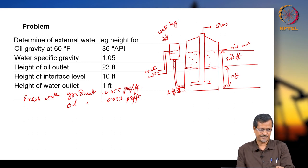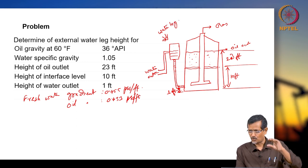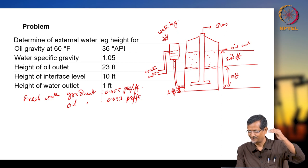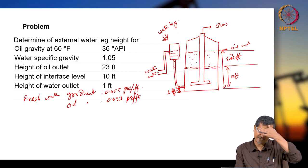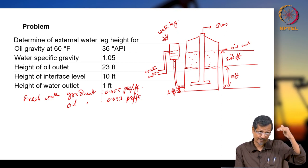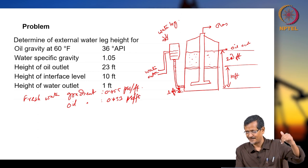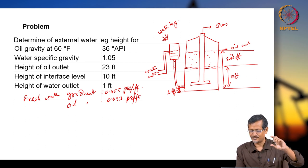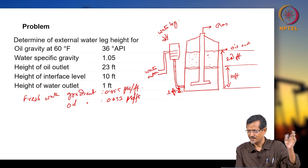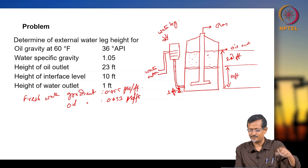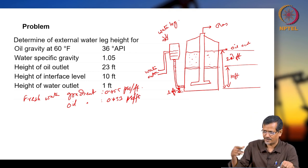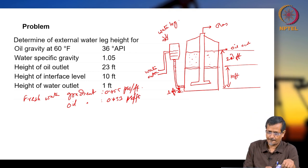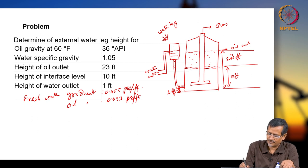The purpose of the water leg is to control the interface level — water flows through the leg. Instead of directly controlling the water interface level inside the vessel, you control it using the external leg. Because it is outside the separated system, controlling will be much easier. There will also be a dump valve and a float arrangement so that you can control this level.